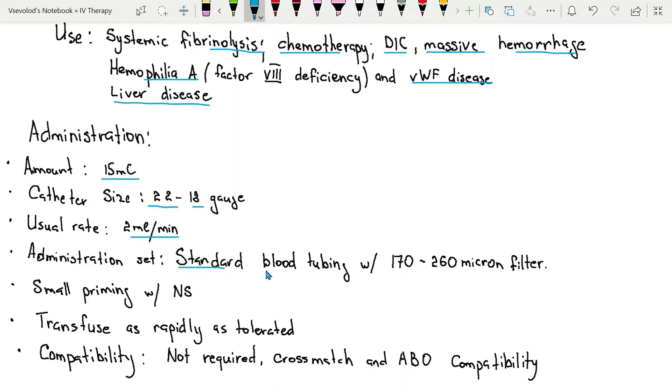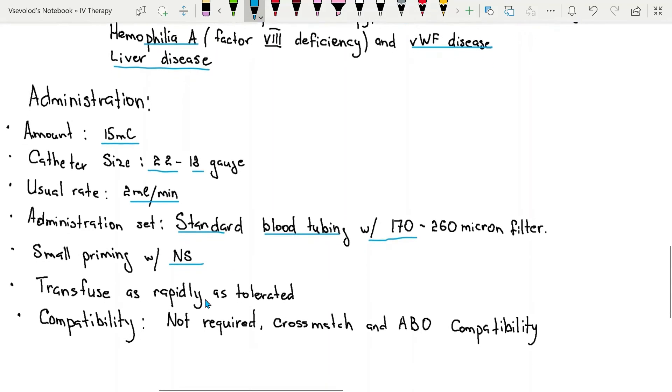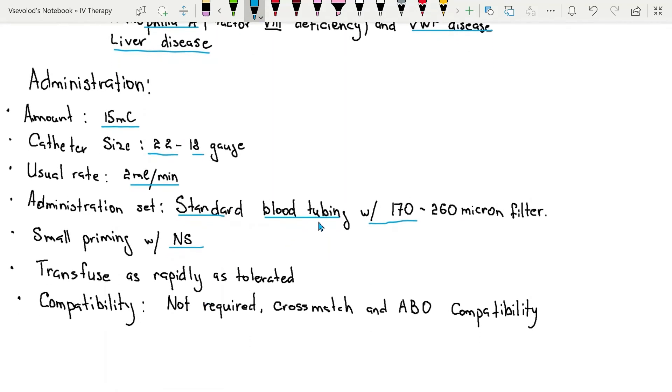Administration set that is usually used is standard blood tubing with 170 micron filter primed with 0.9% normal saline. Cryoprecipitate should be administered through standard blood filter.